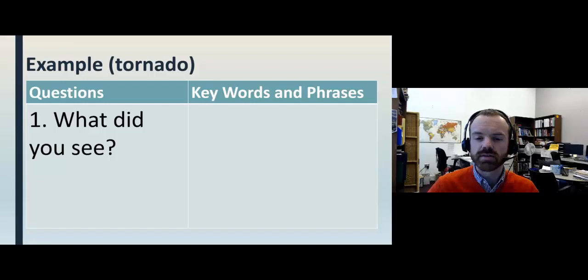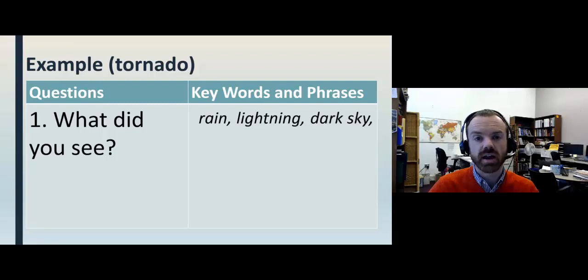A tornado is a violent storm with powerful winds, so the eyewitness might use these words: Rain, lightning, dark sky, clouds, trees bending, objects flying.